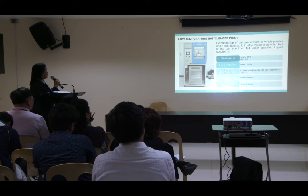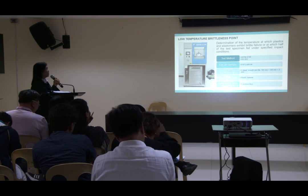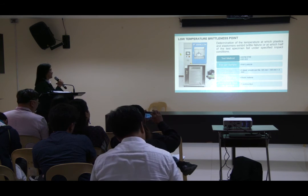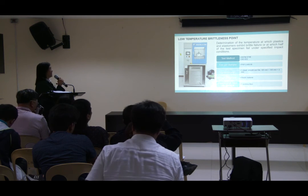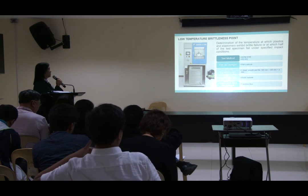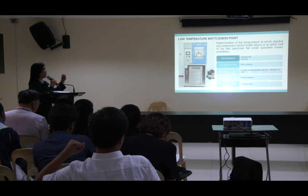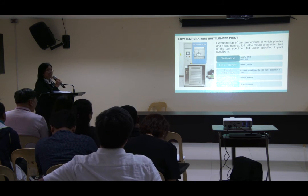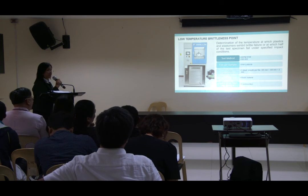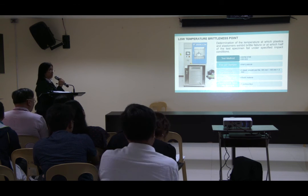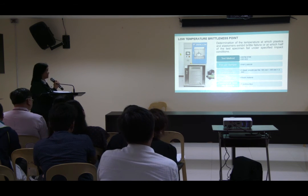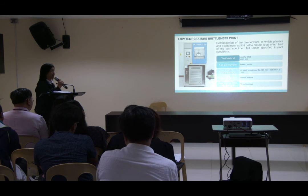For the heat deflection temperature test, we determine the temperature at which the plastic deformation system may reach failure, at which half of the test membrane deforms under specified load. We cool the specimen down to negative 70°C using a refrigerator — not dry ice — and the cooling is done in an envelope configuration.